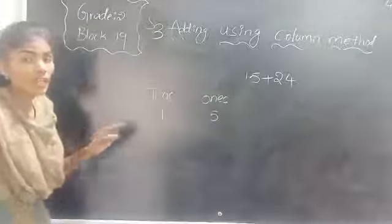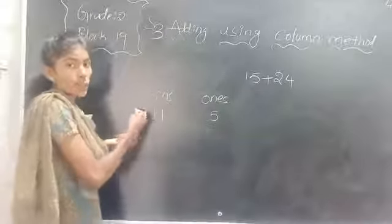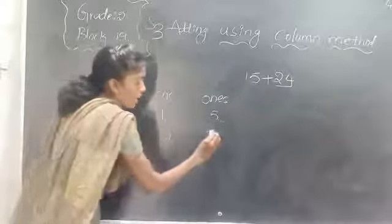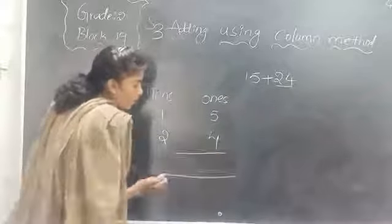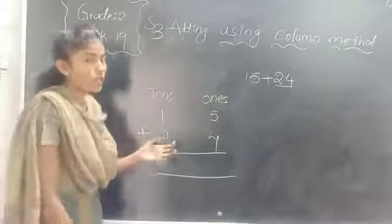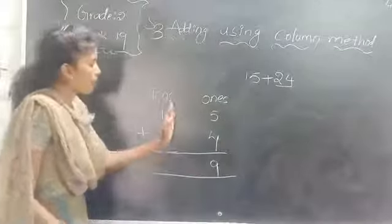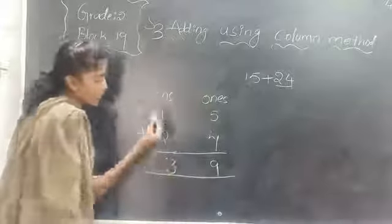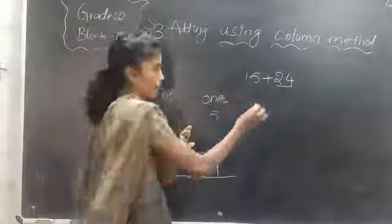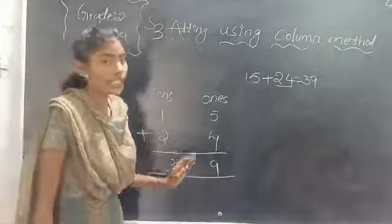Don't get confused children while arranging the numbers. You want to arrange the numbers according to their place values — be careful. So we have 2 tens and 4 ones in 24. Now which operation do we use for addition? Plus. Which place value do I add first? 1s place. 5 plus 4 is 9. And 1 plus 2 is 3. So what is the answer? 39. So 15 plus 24 is equal to 39.